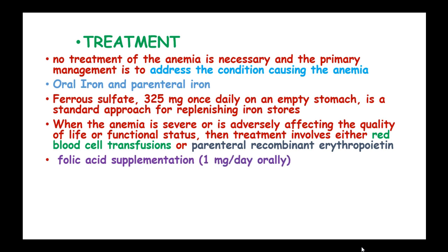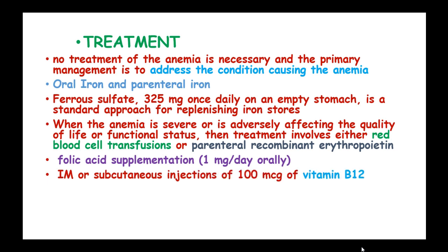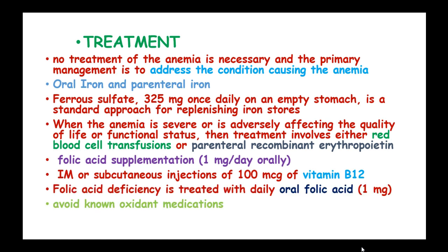Folic acid supplementation of 1 mg per day orally for folic acid deficiency, and intramuscular or subcutaneous injection of 100 micrograms of vitamin B12 for vitamin B12 deficiency anemias. Also, you have to avoid pro-oxidant medications in glucose-6-phosphate dehydrogenase deficiency.